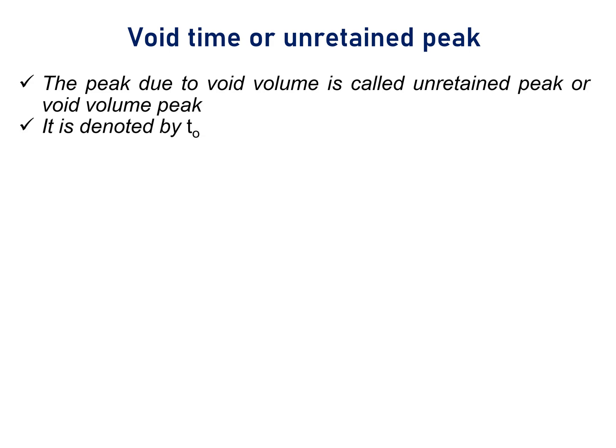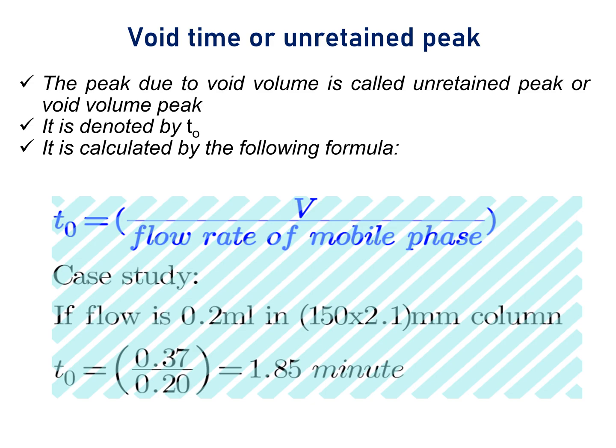And the peak due to void volume is called void volume peak. It is denoted by T0 and it is calculated by the formula T0 equals V divided by flow rate of the mobile phase. In any chromatographic condition, flow rate is known, column dimension is known, porosity of the column is known. And hence, V, that is void volume, can be calculated. And consequently, T0, that is time of unretained peak, can also be calculated.